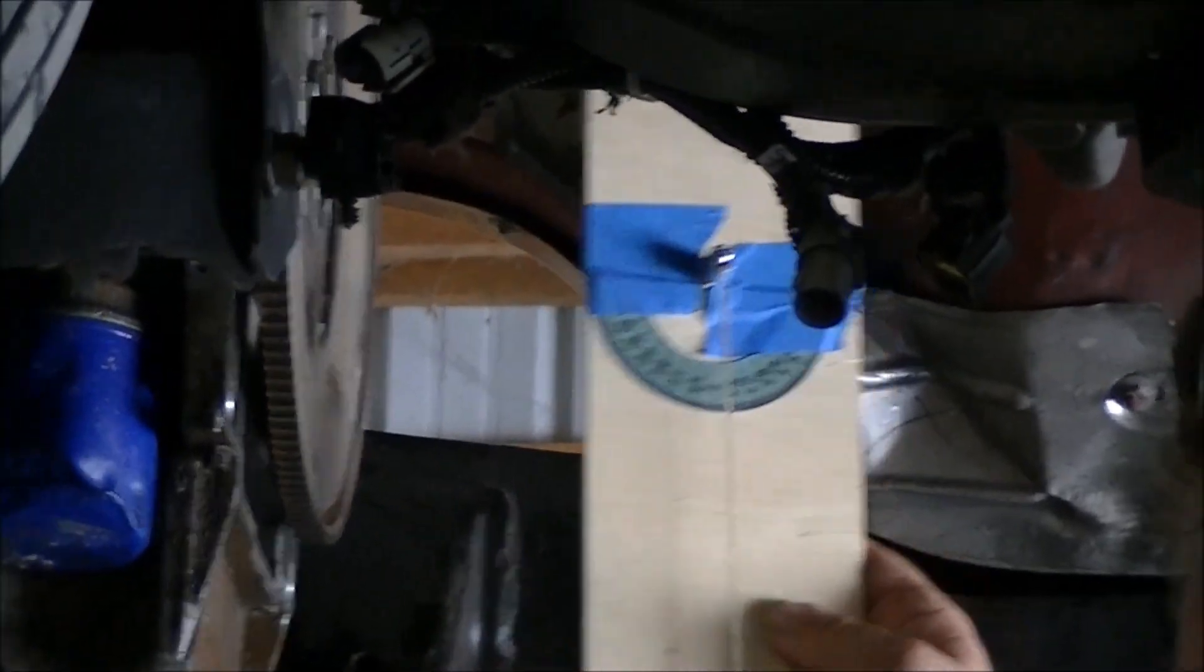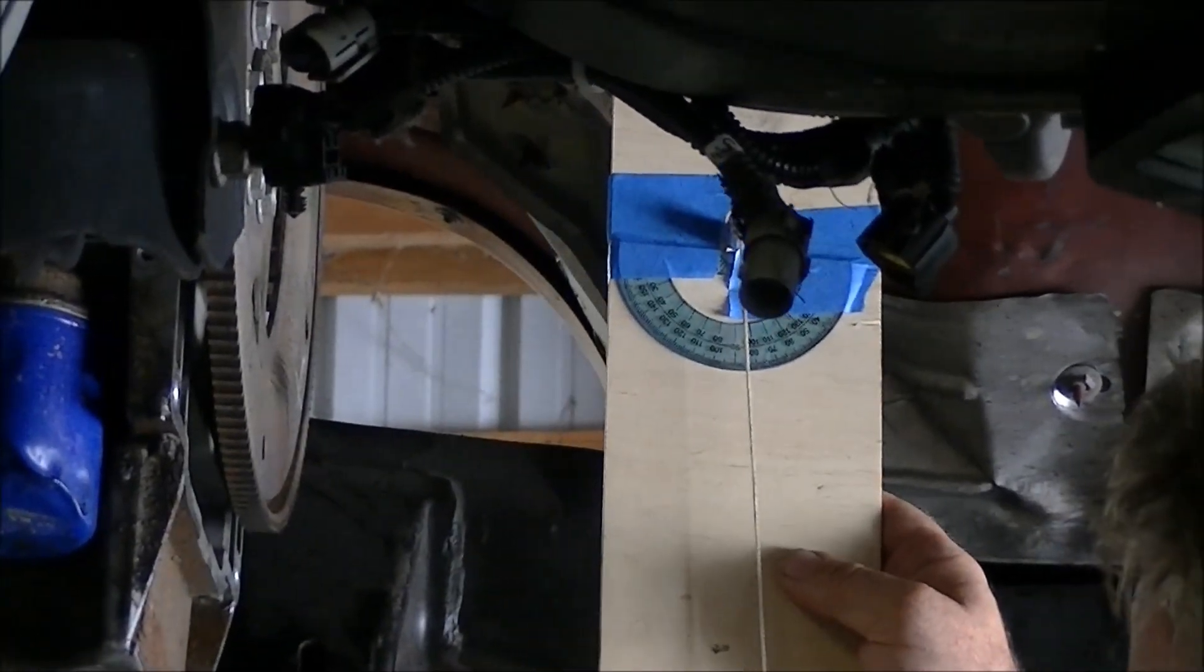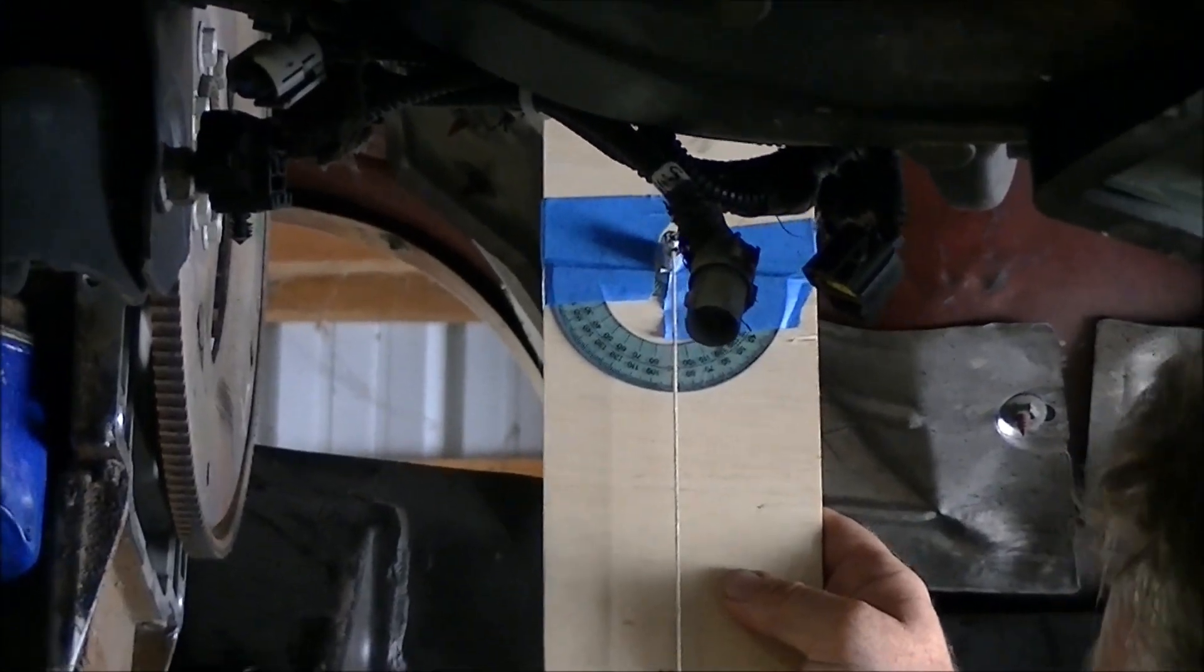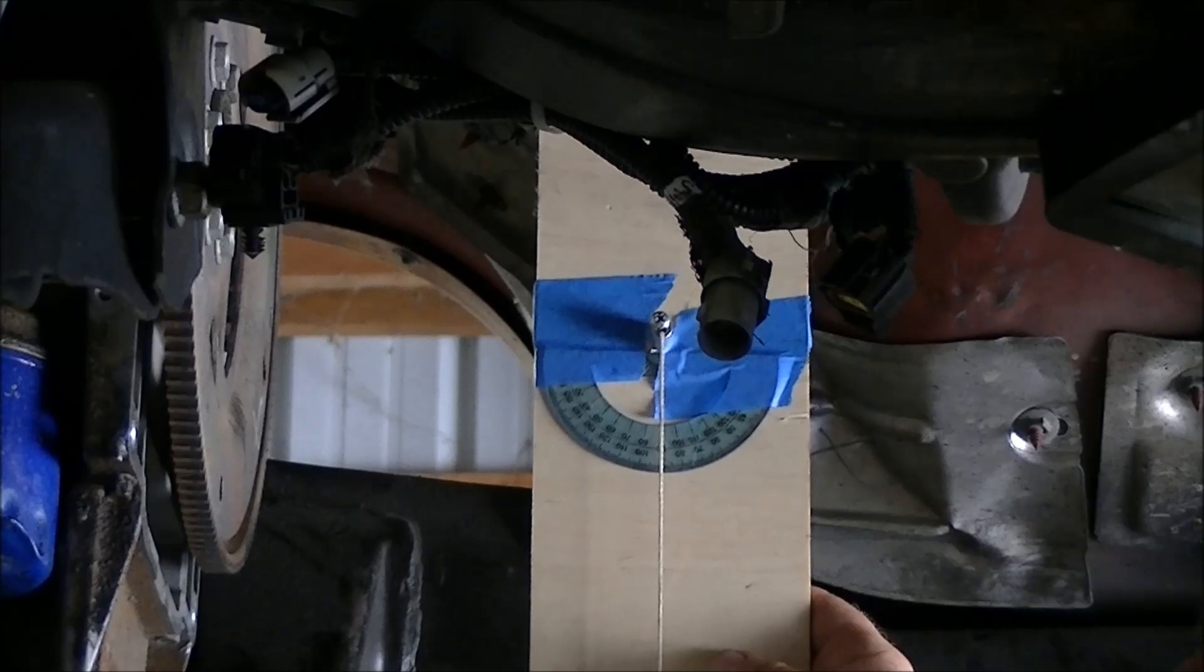First thing I did was I made a level mark by setting this against the tall 4 foot level, and I got my string lined up and I made a mark directly on level and I lined up my protractor.